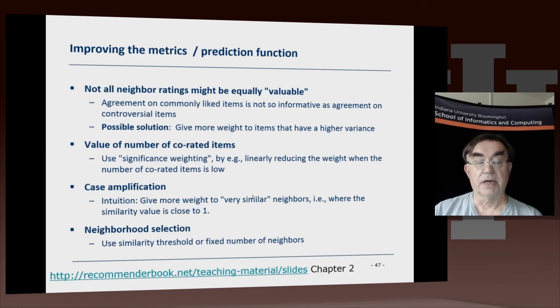And there's this issue here about the long tail. Namely, if everybody likes something, then the fact that you agree on that is not as useful as the case where there's a wider variation of opinion. That's why they say you give more weight to items that have larger variance.